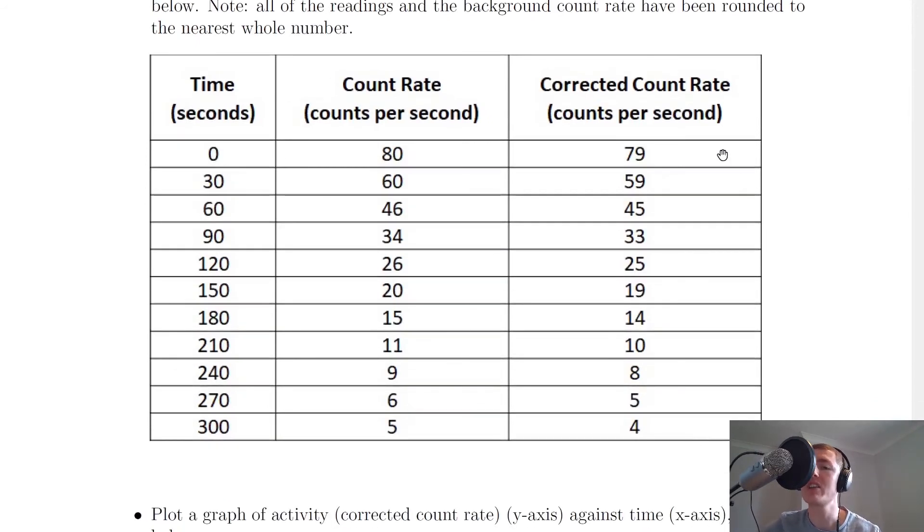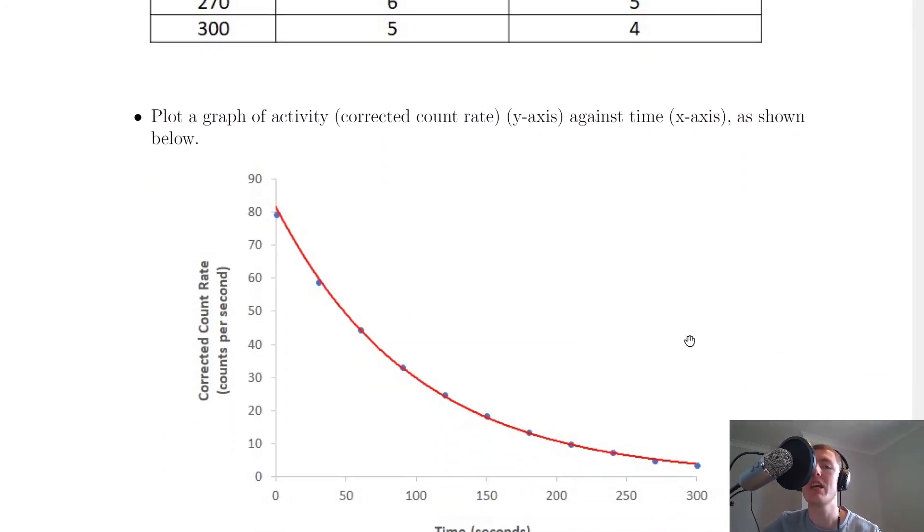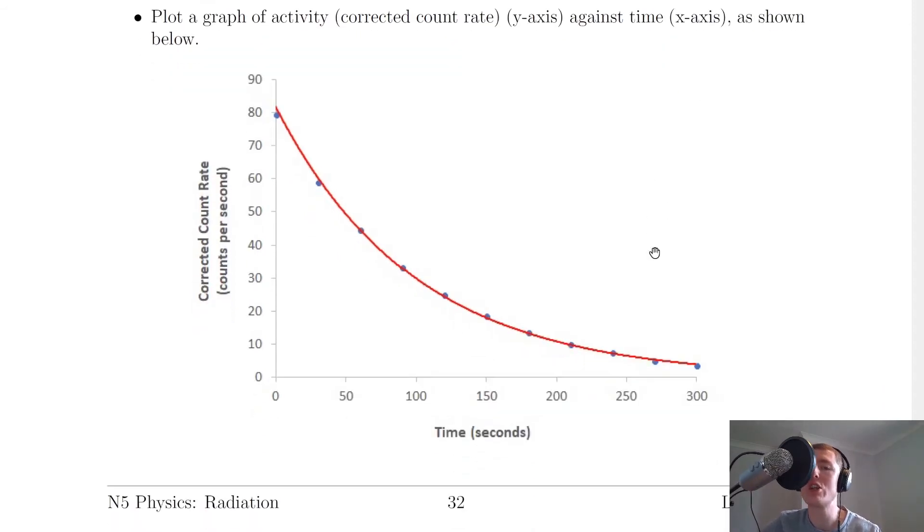That means we then have corrected count rate to plot on a graph. So it says, plot a graph of activity, corrected count rate on the y-axis against time on the x-axis as shown below. If you do that, you should yield a graph that looks something like this. So you've got your corrected count rate in counts per second and your time in seconds. And so essentially this is just activity against time and we should always expect a graph which is an exponentially decaying curve when we've got activity against time for a radioactive source.